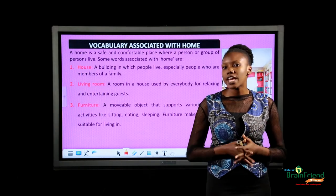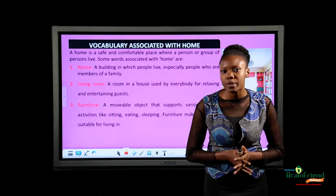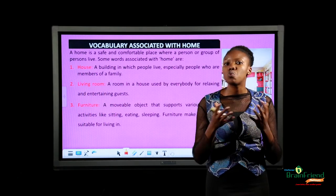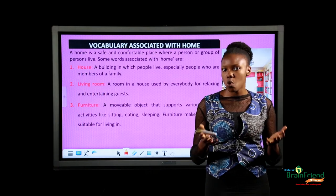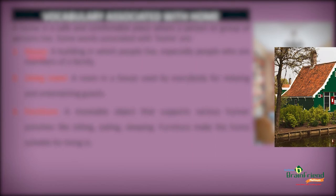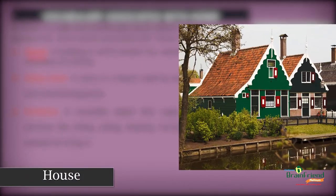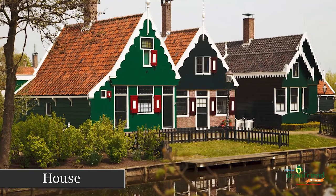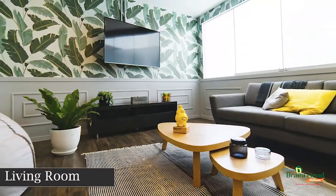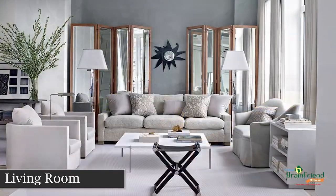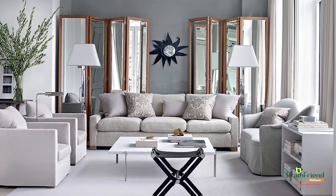A home is a safe and comfortable place where people live in. Now let's take a look at words associated with home. The first we have is House — a building in which people live, especially people who are members of a family. Next, we have the Living Room — a room in a house used by everyone for relaxing and entertaining guests.